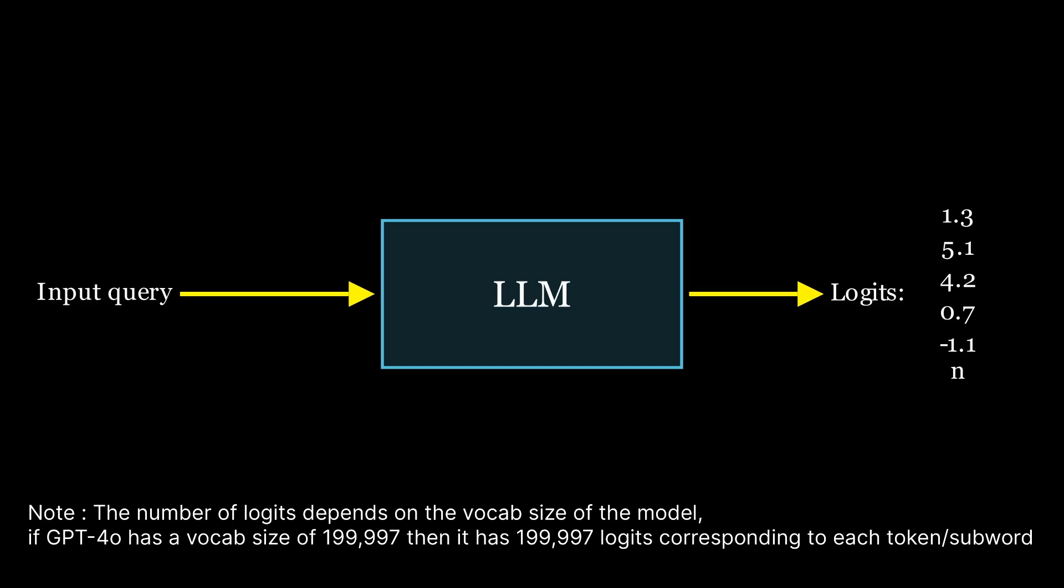When input text is passed to a large language model, in the final layer it produces what we call logits. The logits are numerical scores generated by the final dense layer of the large language model. The number of logits corresponds to the number of words in the model's vocabulary - each word has a logit score associated with it.